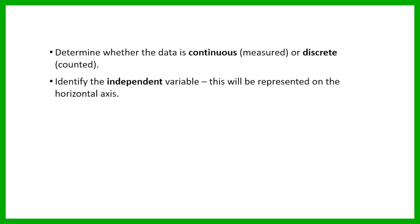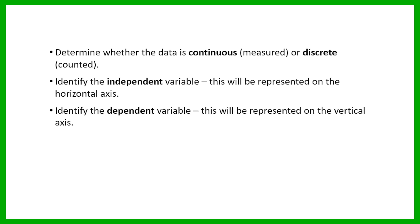You also need to identify the independent variable — this is the variable that's going to go on the horizontal axis — and the dependent variable is the one that's going to go on the vertical axis. The independent variable is the one that doesn't get affected by changes in the other variable, but the dependent variable does get affected by changes in the independent variable.